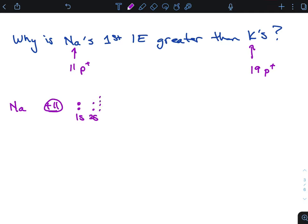And then potassium is going to have 19 protons, and it's going to be 1s2, 2s2, 2p6, 3s2, 3p6, 4s1. So potassium ends in 4s1. So now, what's going on here? So why is sodium the greater ionization energy?